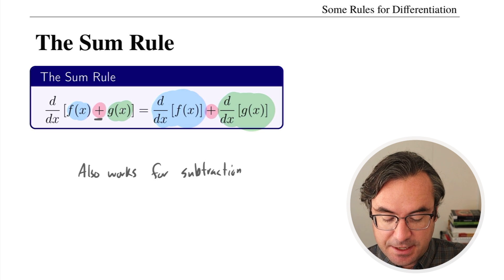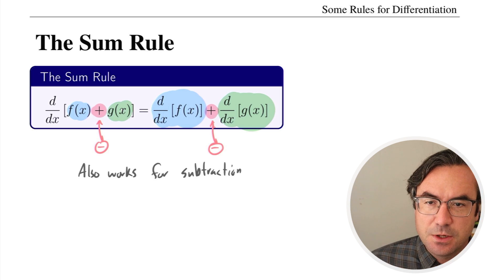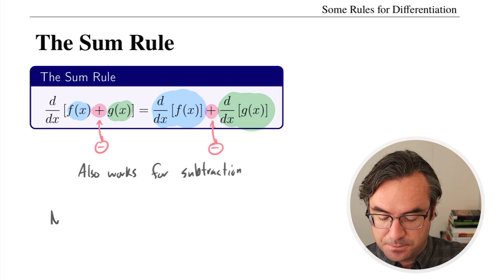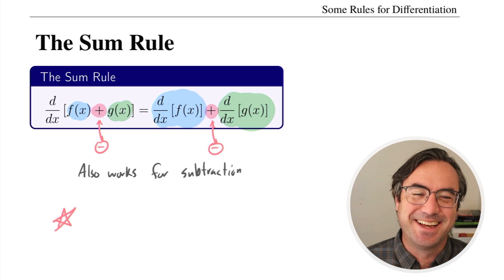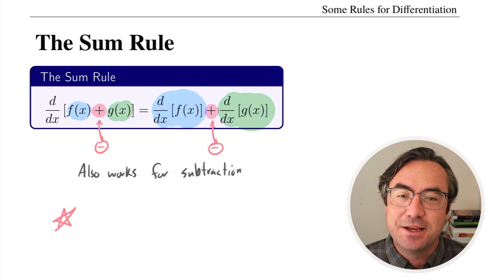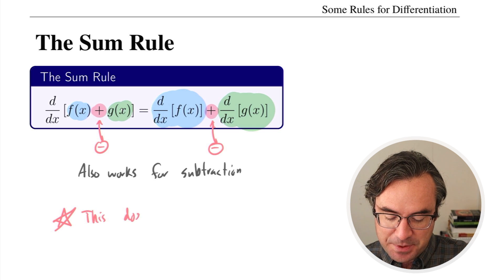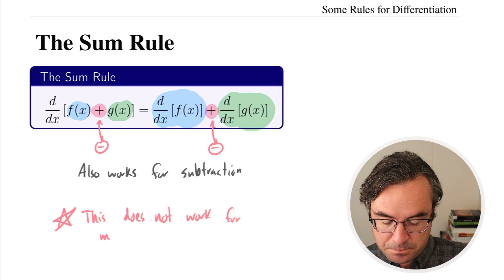If there was a minus sign, then we would just put a minus sign in the derivative as well. Now this does not work for multiplication or division. That's worth noting — there is a rule for multiplication and a rule for division, and we're going to get there eventually, but it's not as simple as the sum rule. So don't be tempted to apply it to multiplication or division.